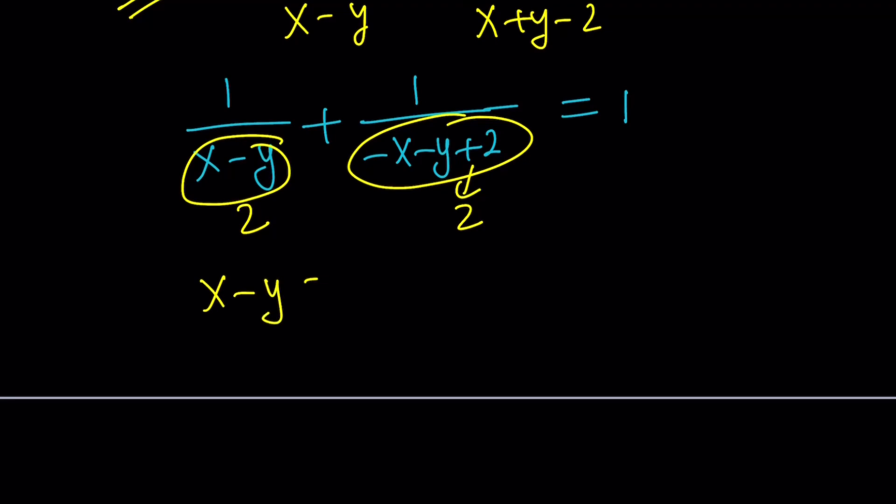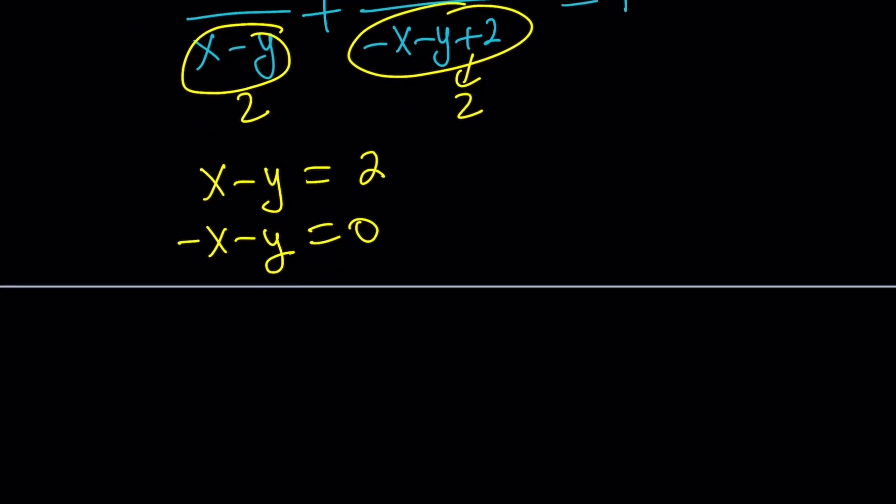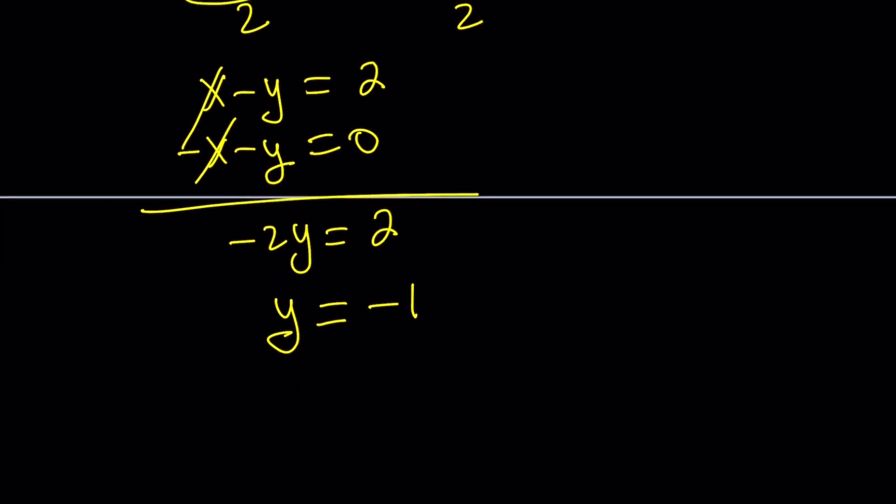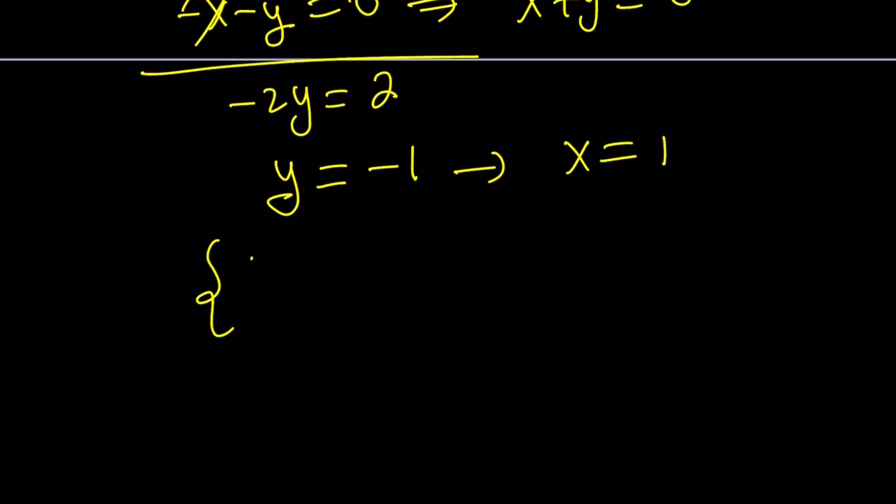So from here, we get x minus y equals 2 and negative x minus y is equal to 0. Obviously, the sum is 2, but we subtracted 2 from both sides. And now you can go ahead and eliminate x or y here. x is going to eliminate. We're going to get negative 2y is equal to positive 2, which implies y is equal to negative 1. And of course, since x minus y is equal to 2, or by the way, this implies that x plus y is equal to 0, because if you multiply both sides by negative 1, you're going to get x plus y equals 0. And again, x and y have to be opposites, so this implies that x equals 1. Therefore, the only solution ordered pair is going to be 1, negative 1 for this equation.